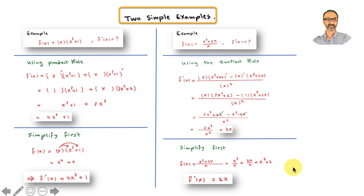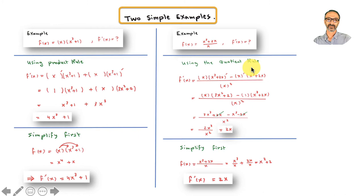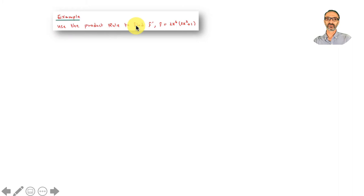Some students think the quotient approach is too lengthy and want to divide instead. But that doesn't work all the time. For example, if the numerator is sine x and the denominator is e to the x plus 17x — are you going to divide e to the x by sine x? You need to know the product rule and the quotient rule; these are essential skills.